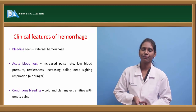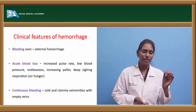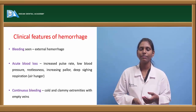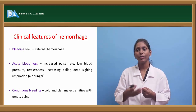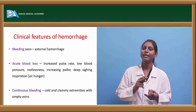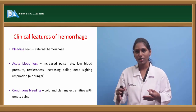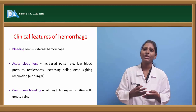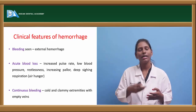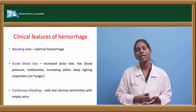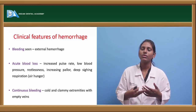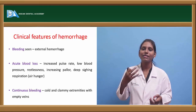The clinical features of hemorrhage include visible bleeding in external hemorrhage. In acute blood loss, the heart pumps more blood to compensate, causing increased pulse rate. There will be low blood pressure, restlessness, increasing pallor, and deep sighing respiration — indicating air hunger — because the oxygen-carrying capacity of hemoglobin is reduced and the body demands more oxygen.